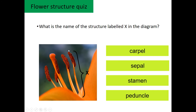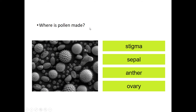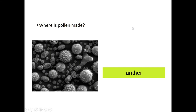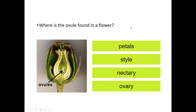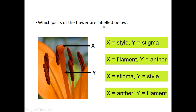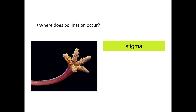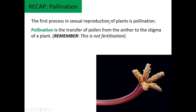These are the exact questions you'll have in the quiz. Structure X is the male reproductive system — it's the stamen: anther and filament. Pollen is made in the anther. The ovule is here in the ovary. The stigma is X — where the pollen has to land — and the style is Y. Where does pollination occur? It's on the stigma. Remember, the pollen grains land on the stigma. Pollination is the transfer of pollen from anther to stigma.